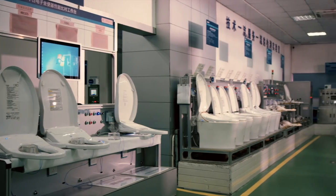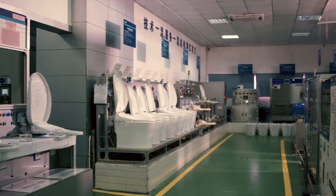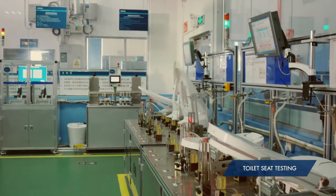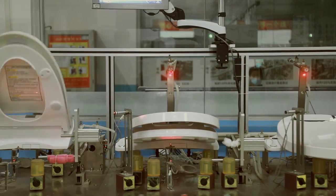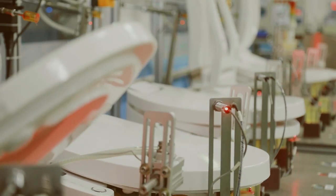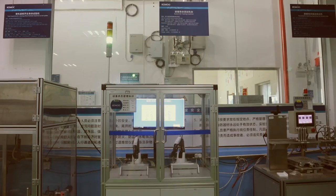In this area, toilets undergo life cycle tests. For example, here is a toilet seat cover being tested. The mechanic arm opens and closes the seat for 100,000 times. This is our internal standard, while industrial standard is 30,000 cycles.